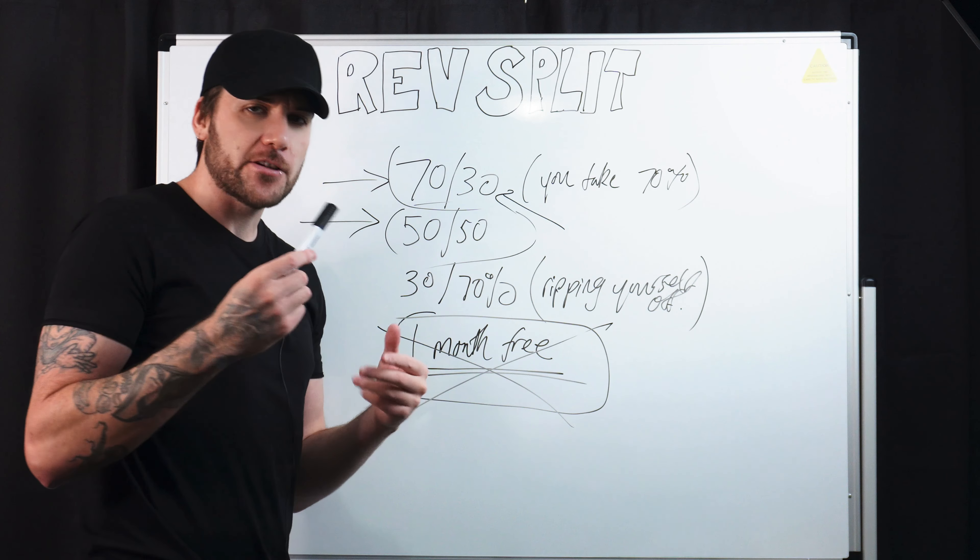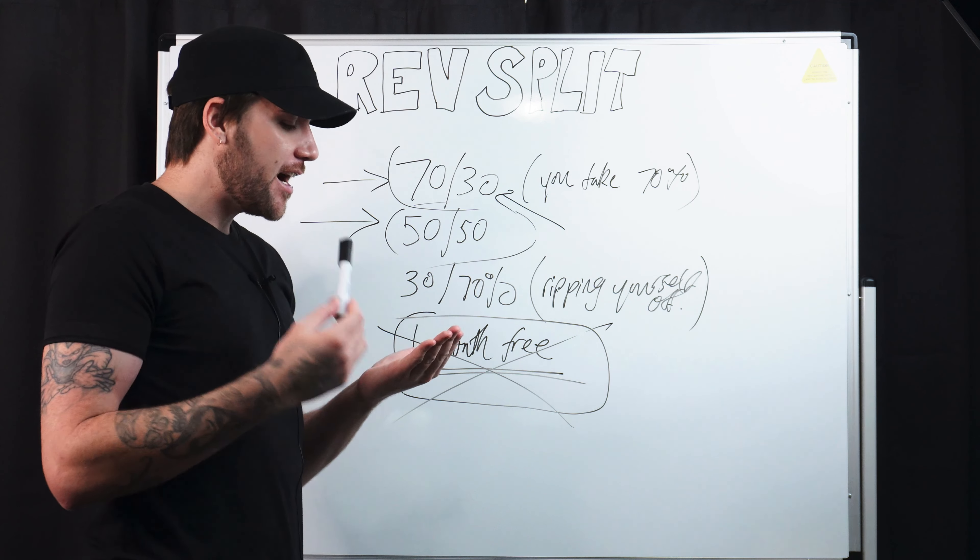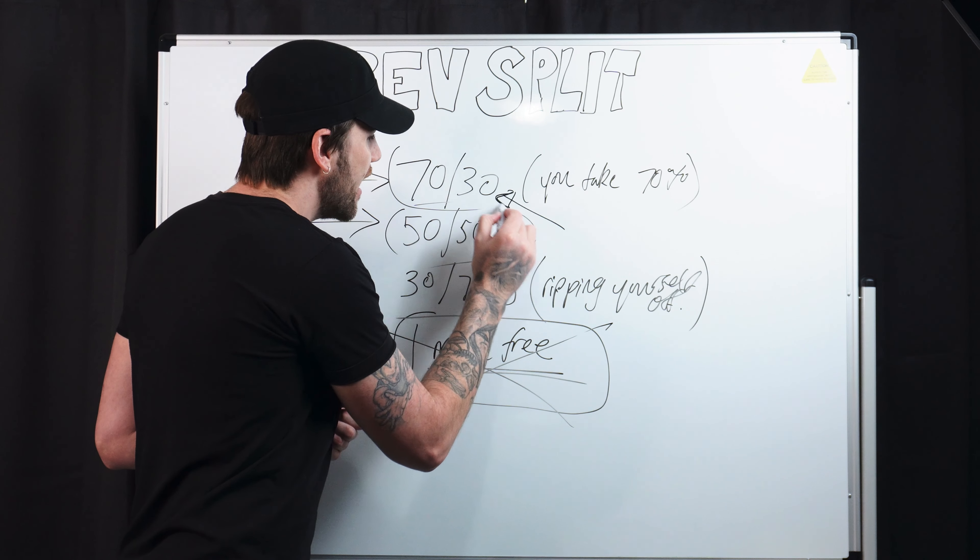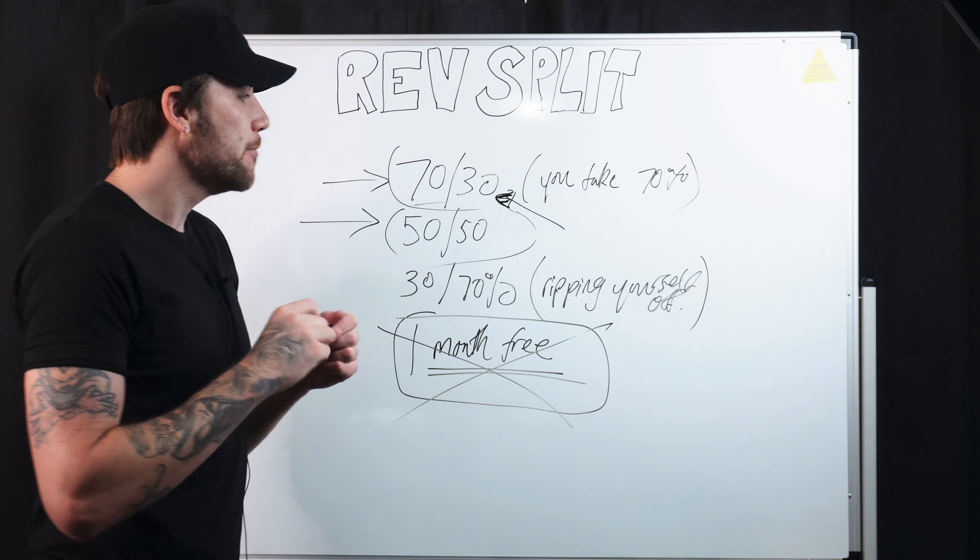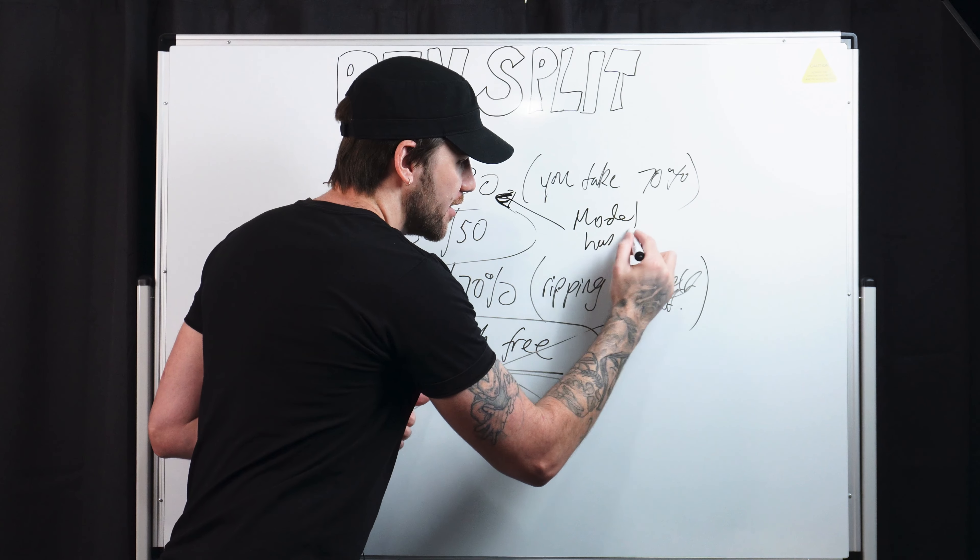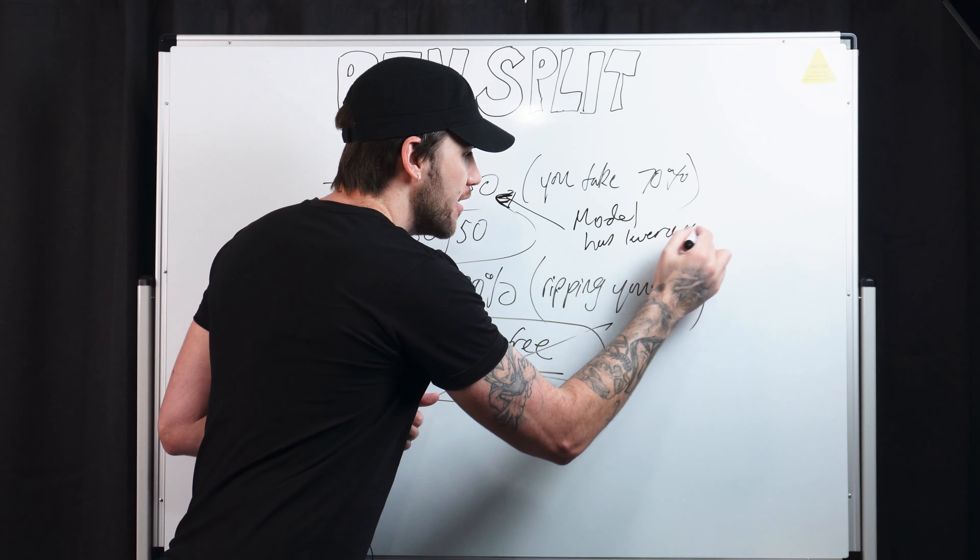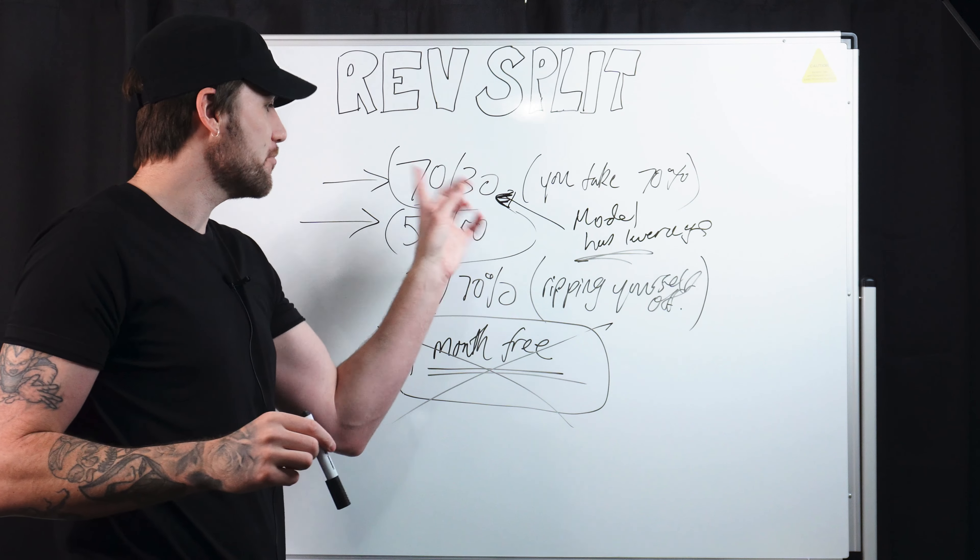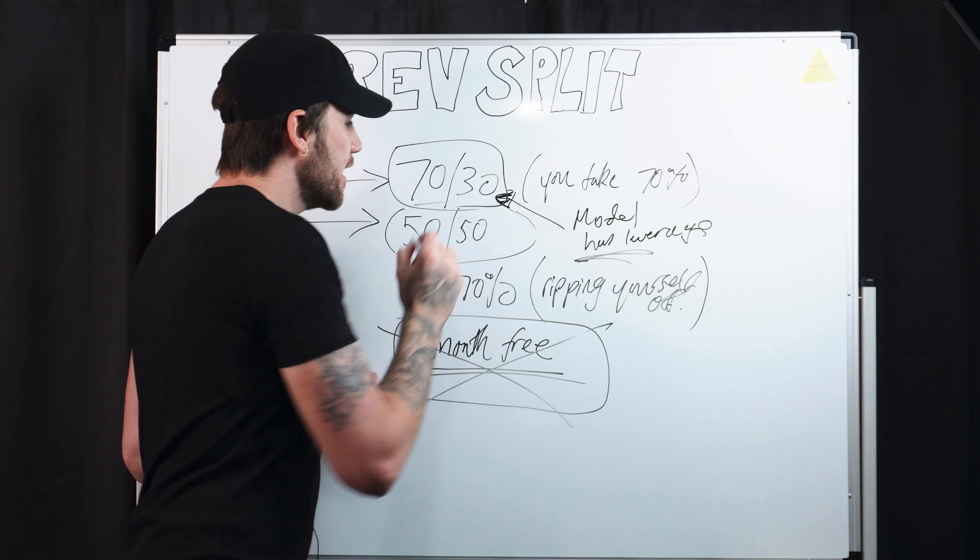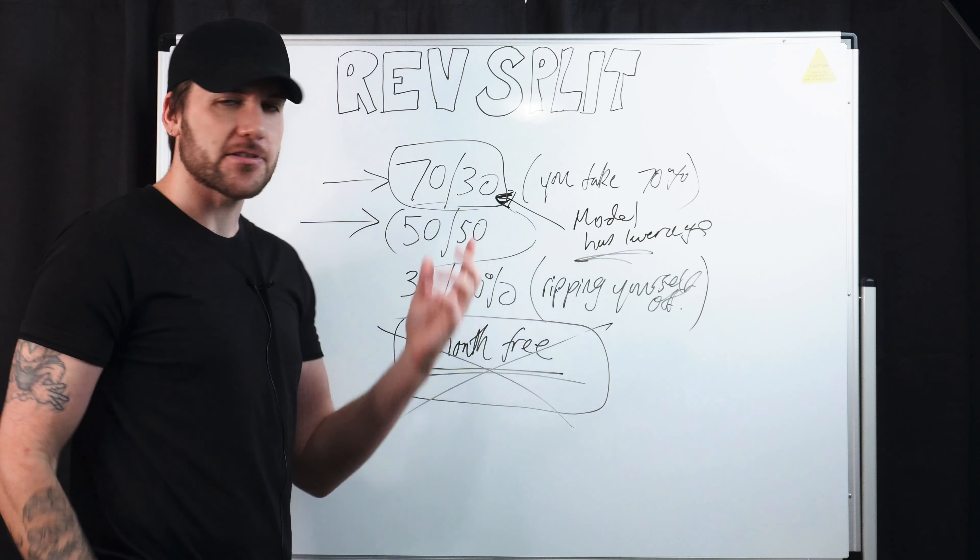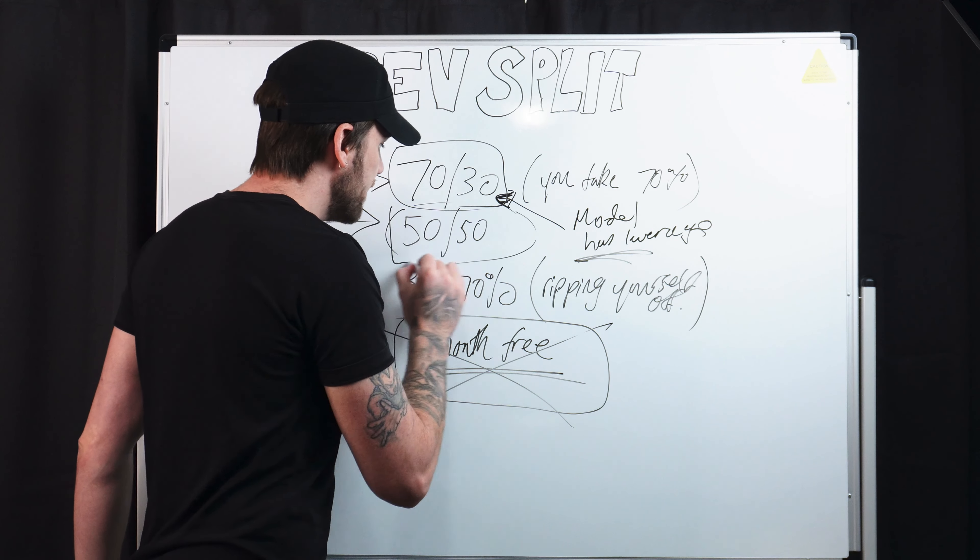But that is going to come with a lot of pushback and you have to have some social proof to back that up. So if you're just starting out and you can't make that girl 10K in her first month, then you're not in a position to ask for a 70, 30 split. Because the model has leverage. Model has leverage. Her leverage is that you're just starting out and she has the account that you want to manage. So 70, 30, probably not going to happen because you can't back it up with proof. You can't back it up with results.